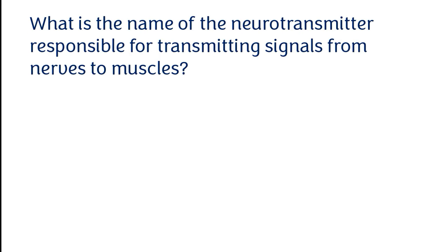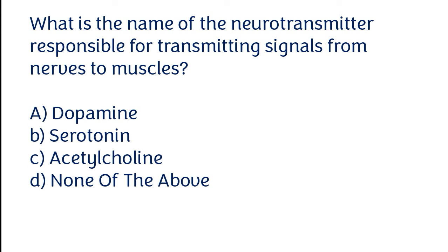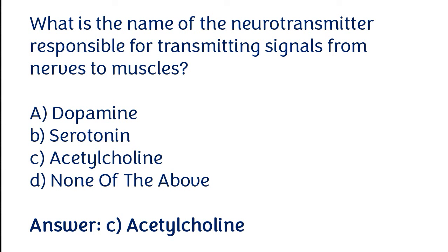What is the name of the neurotransmitter responsible for transmitting signals from nerves to muscles? Options: Dopamine, Serotonin, Acetylcholine, or None of the above. The correct answer is option C — Acetylcholine is the neurotransmitter responsible for transmitting signals from nerves to muscles.